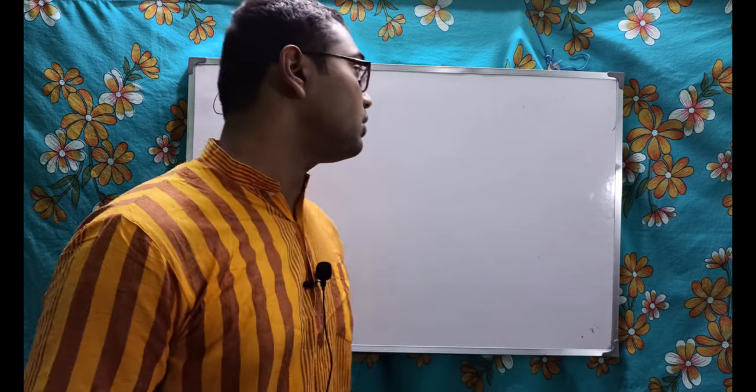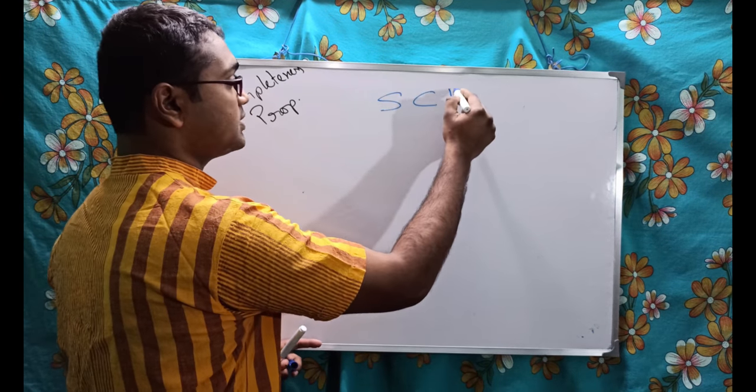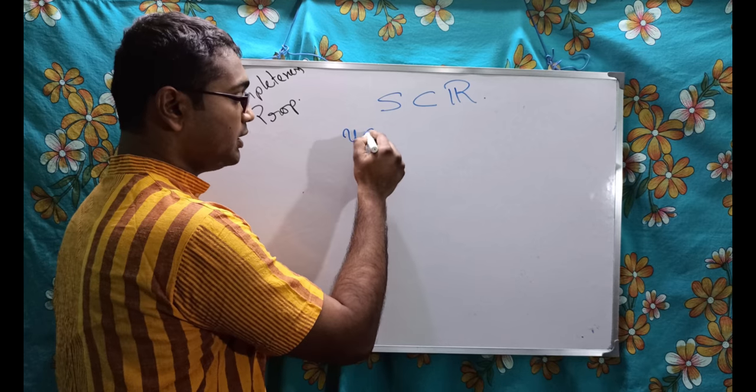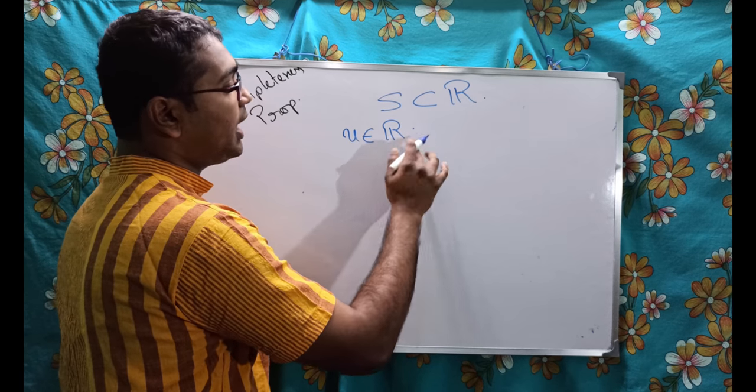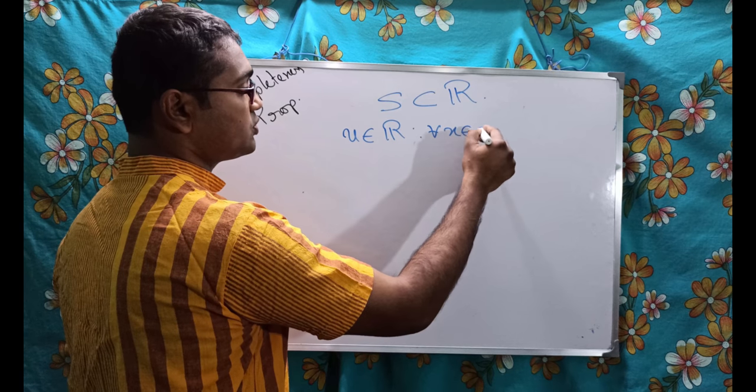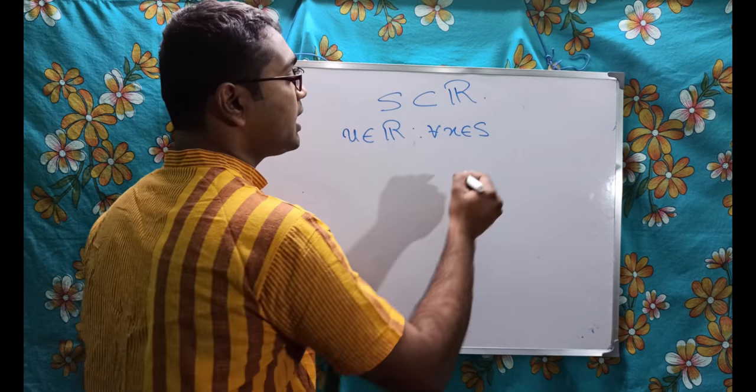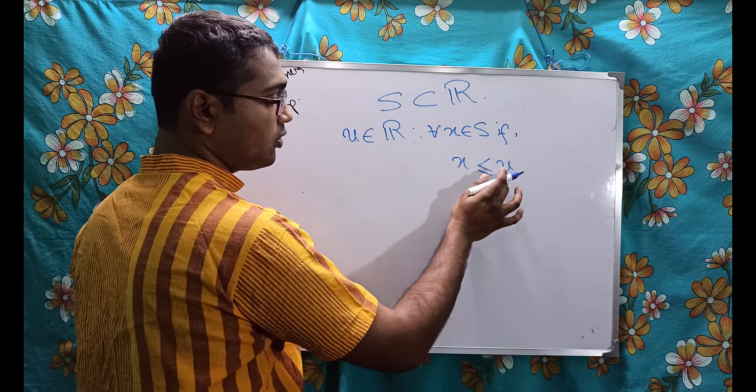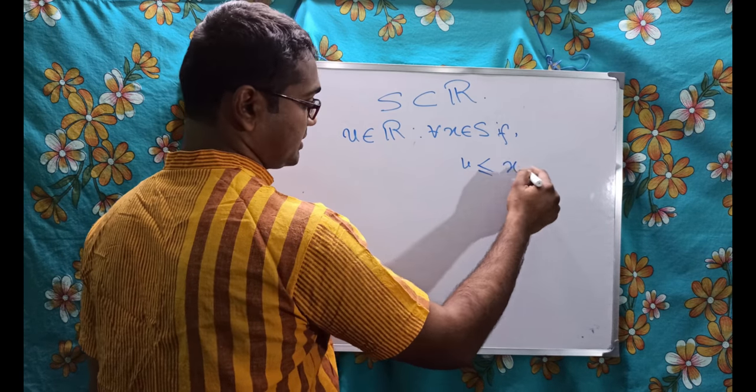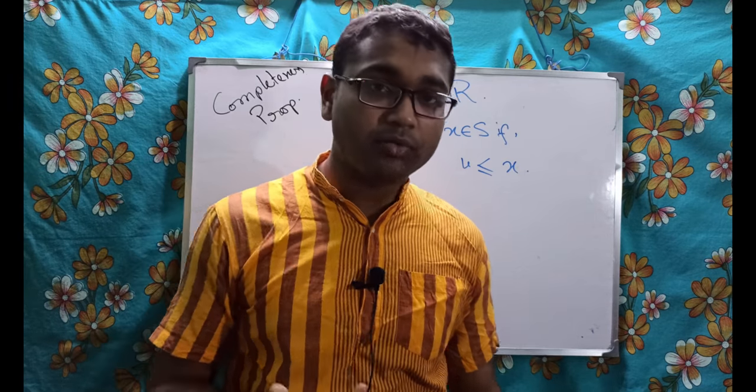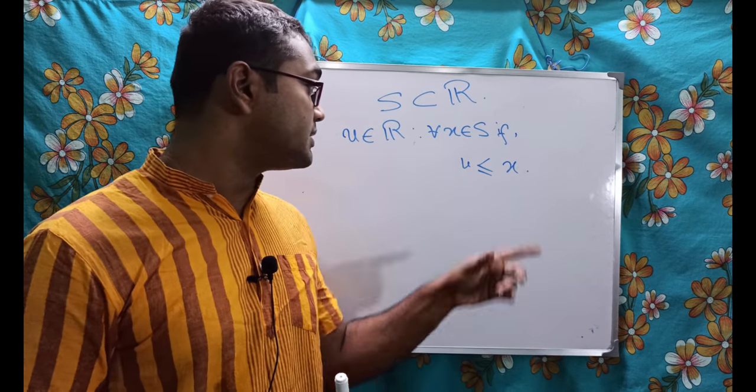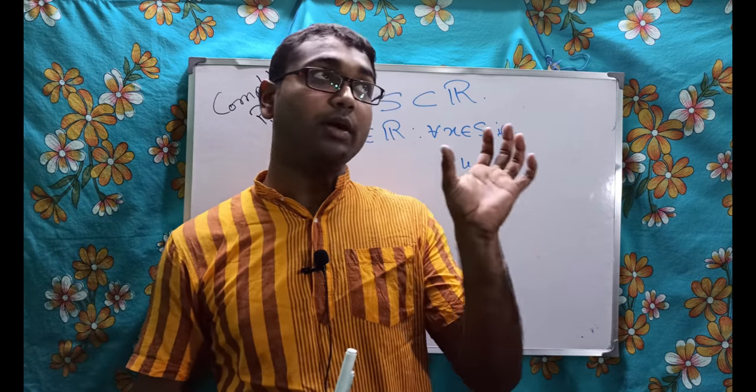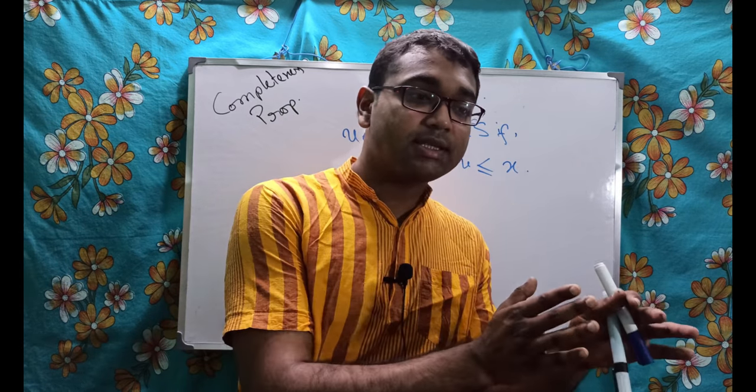The completeness property says for a subset S of the set of real numbers R, if there is a number, let it be U belongs to R, such that for all X belongs to S, that is for all the elements of S, if U is less than or equal to X, and this one is applicable for all the elements of S because I have given here for all.